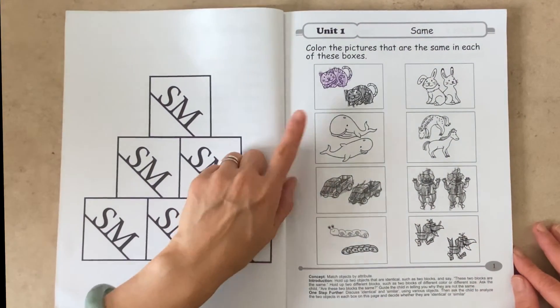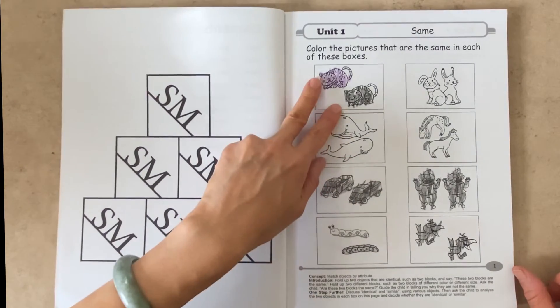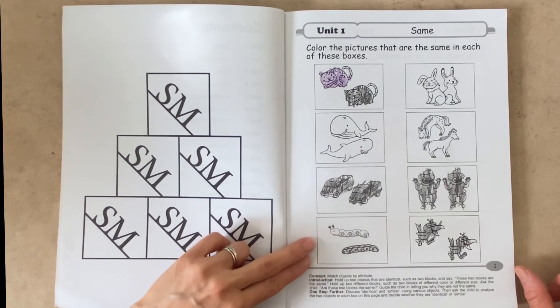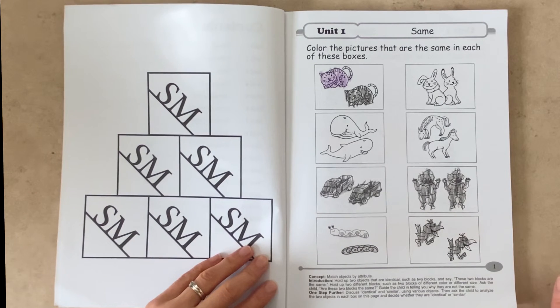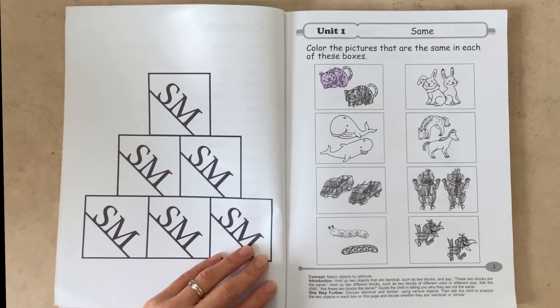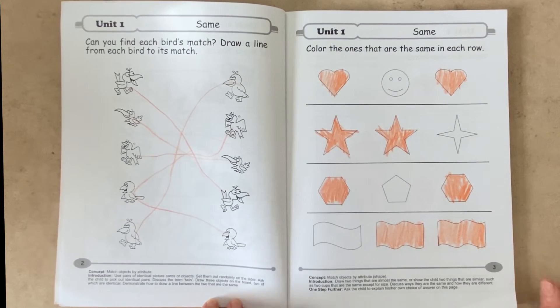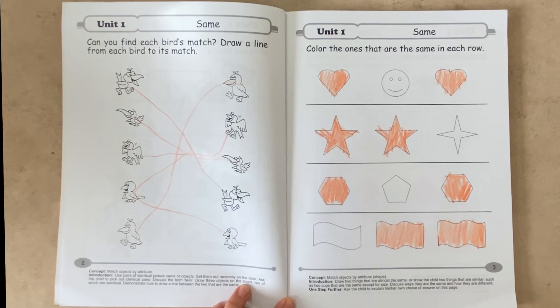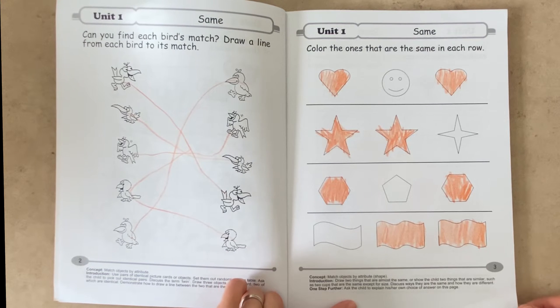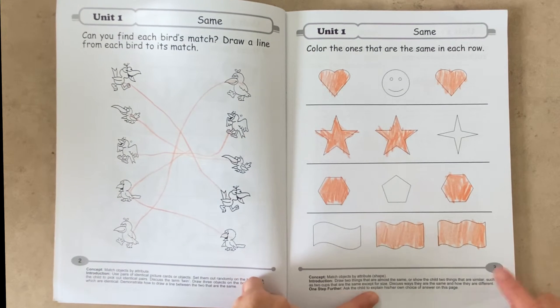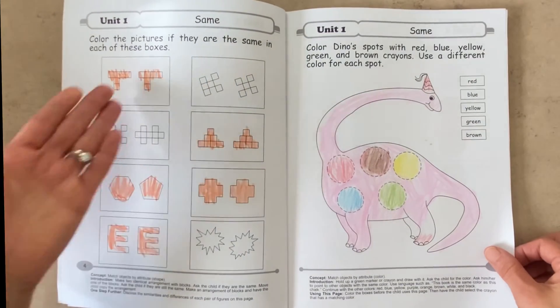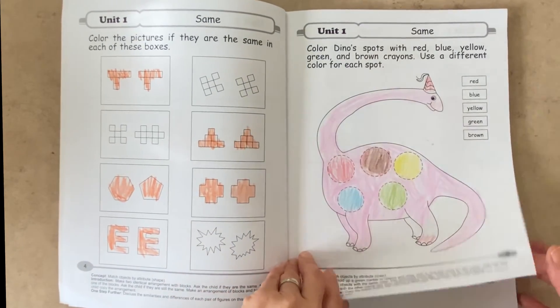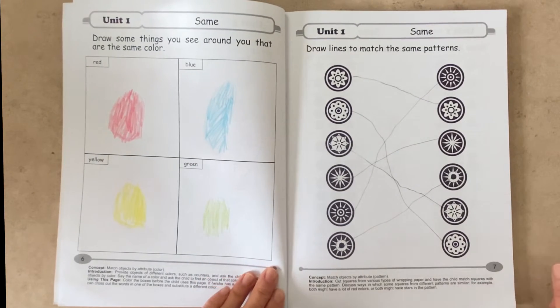So kindergarten A is going to start with identifying the same. And here we are identifying which boxes have the items that are the same. And on every page at the bottom, there are suggestions on various hands-on ways to present the concepts that we're learning. So it's a good idea to have blocks, counters, some items that are the same and some items that are different, just on hand, just in case. In addition to hands-on suggestions, the program will share ways to encourage the child to maybe describe the concepts in their own words. So the book continues like this, where you get to identify same, at least in unit one, and then color. So it's a lot of black and white, which has been really great, because that way we can actually color the pages.